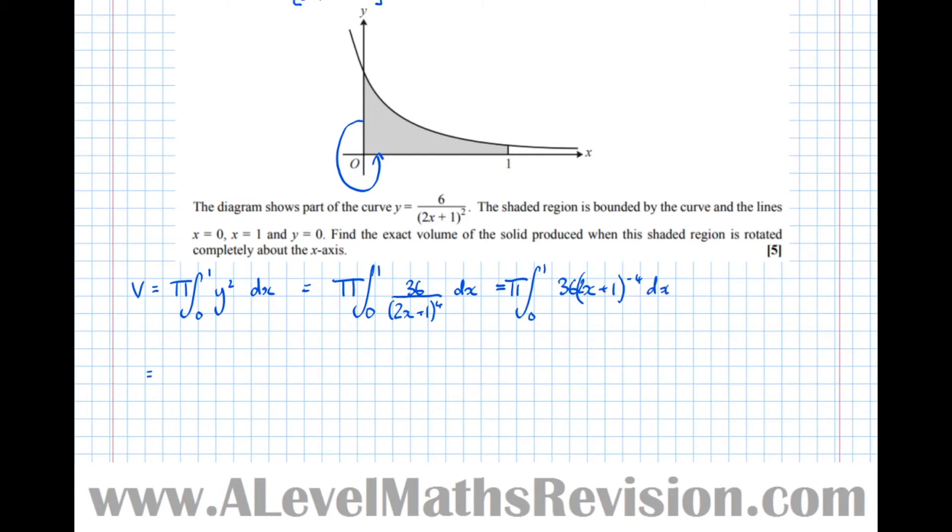I can write that in a more integration-friendly format. So pi times the integral between 1 and 0 of 36, 2x plus 1 to the power of minus 4 dx. We'll keep going. Equals, and now let's integrate. Let's add 1 to the power. Equals pi. And we've got 36, 2x plus 1, and add 1 to the power of minus 3, over minus 3, divide by the new power. But also, remember we need to divide by the differential of the bracket. This is a reverse chain rule. What's in the bracket is linear. But we can skip doing all the integration by substitution working because we know we're just going to end up dividing by 2. So if we make the bottom 2 times bigger, that's the equivalent dividing by 2.